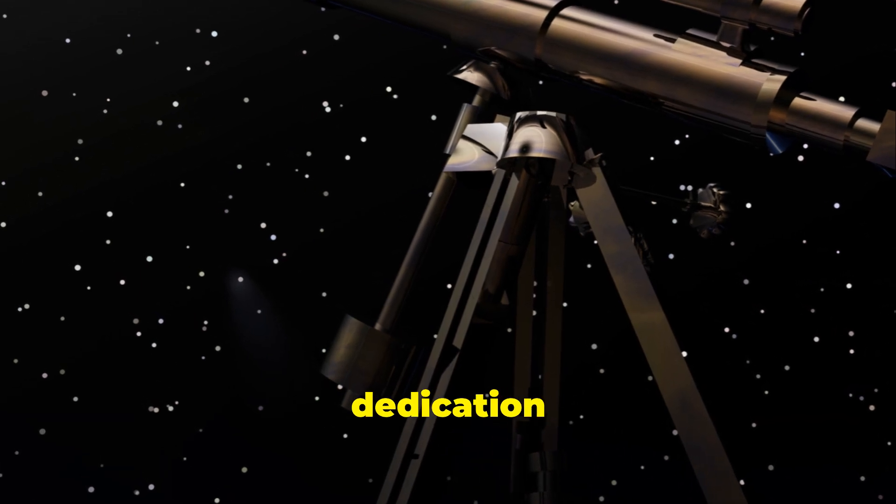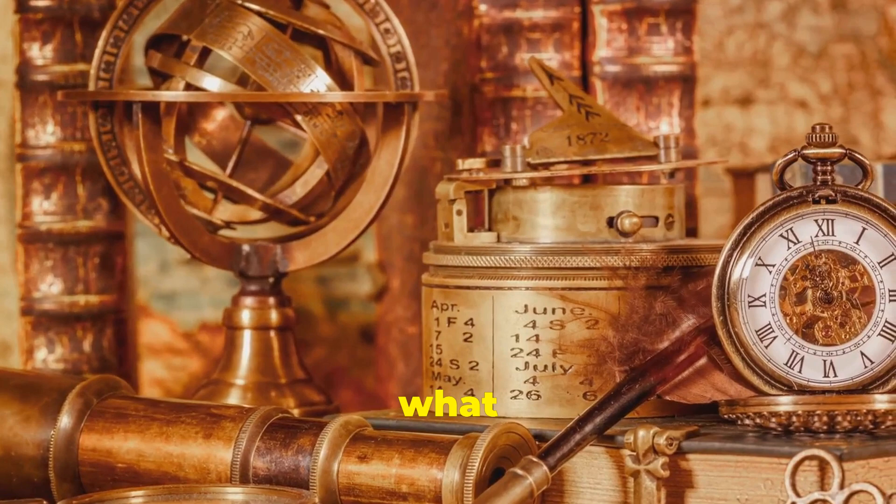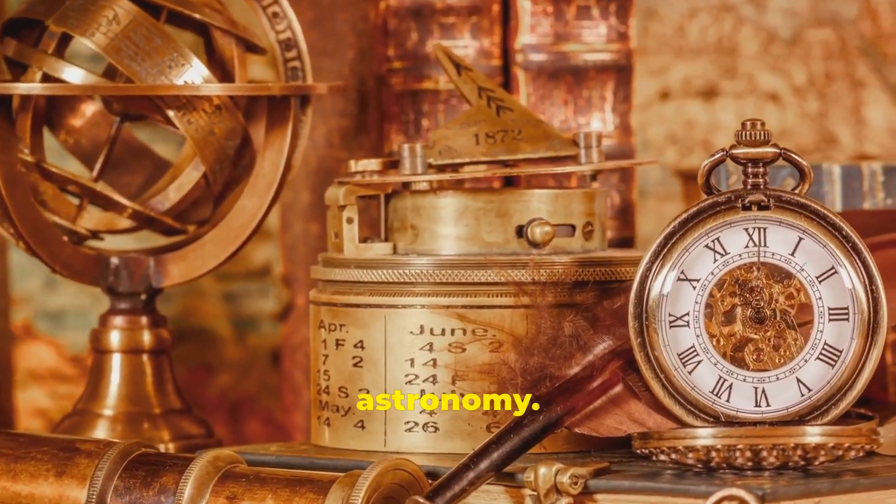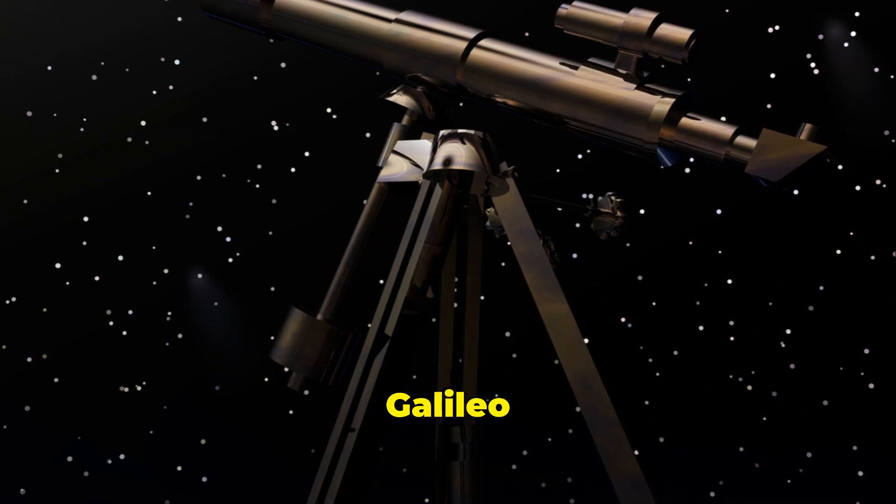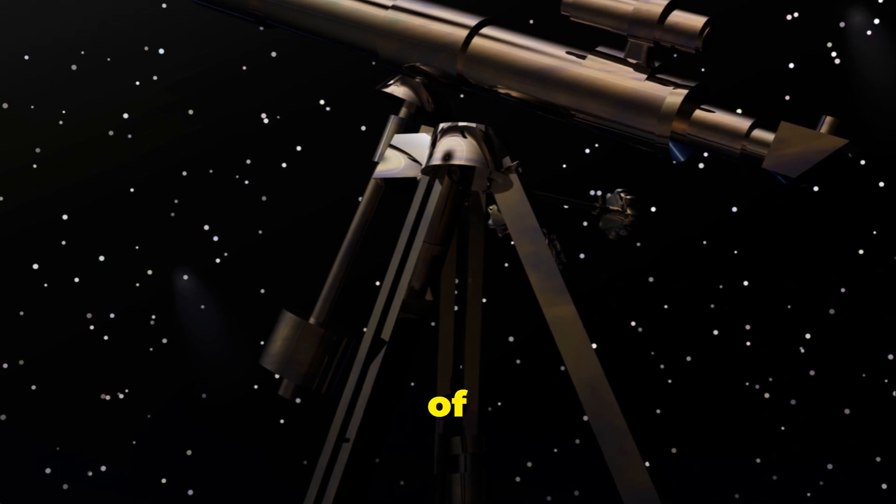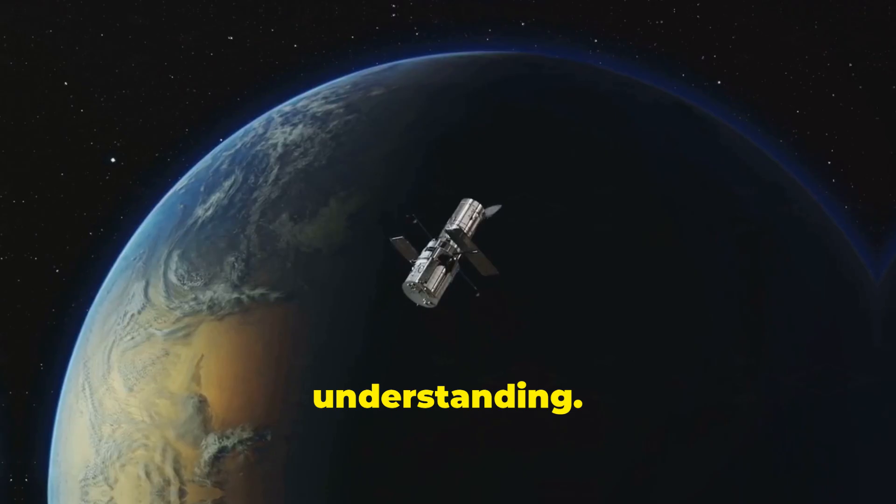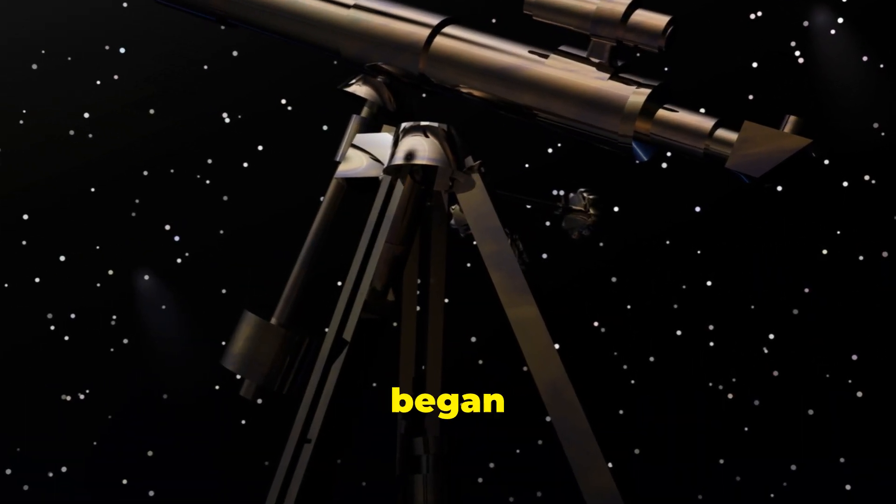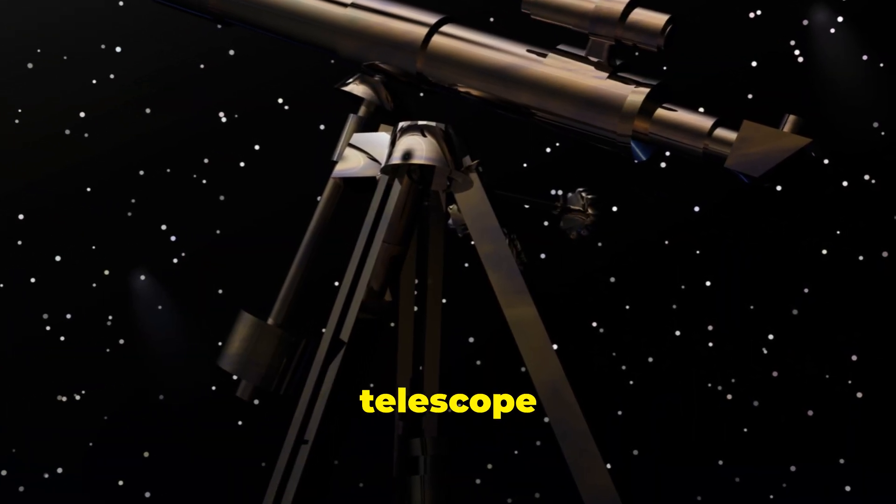Galileo's relentless dedication and these refined observational methods formed the backbone of what would come to be known as modern astronomy. By pointing his telescope to the heavens, Galileo not only saw beyond the limits of human vision, but also beyond the constraints of contemporary scientific understanding. The significant revelations began on January 7th, 1610, when Galileo first turned his telescope towards Jupiter.